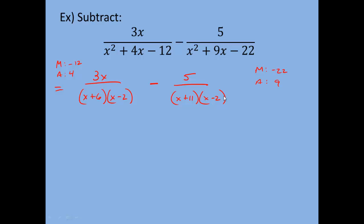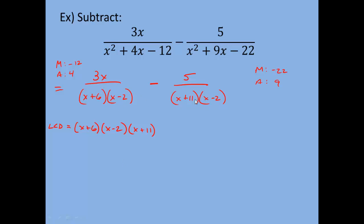Now I'm looking for the LCD for all fractions. Every factor that appears must be represented. I have (x + 6) in the first fraction's denominator but not the second, so I need x + 6. I have (x − 2) in both, so I need x − 2. I have (x + 11) in the second fraction but not the first, so I need x + 11. The LCD is (x + 6)(x − 2)(x + 11).